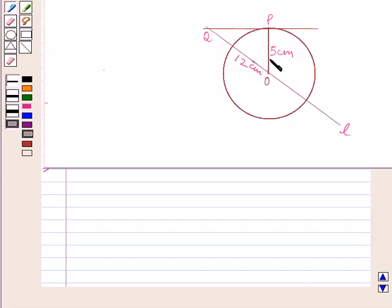And we are given that radius of the circle is 5 cm. So, OP is equal to 5 cm. Now, L is a line passing through center of the circle, and it intersects tangent through P at point Q. And we are also given that OQ is equal to 12 cm.